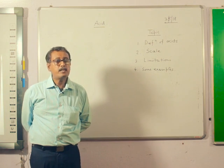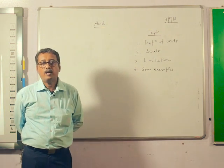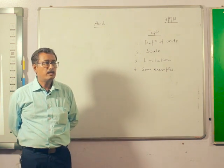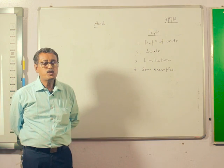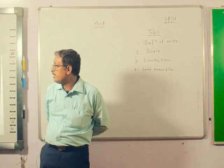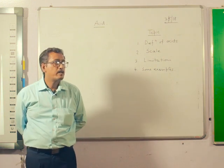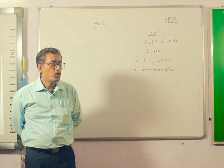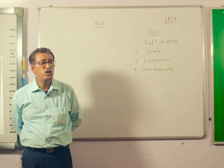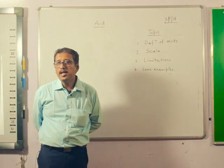There are some limitations on the definition of Arrhenius. Later on, Bronsted describes acids as compounds that give up protons - that means acids are proton donors and bases are proton acceptors.